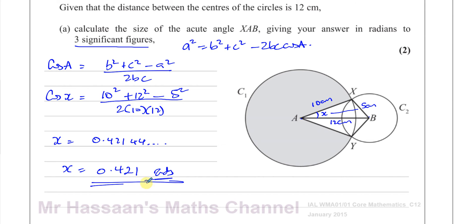They want this to 3 significant figures, so X = 0.421 radians. That's the answer to this question. Therefore, the angle XAB is equal to 0.421 radians. That's the answer to part A.